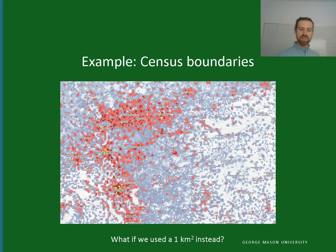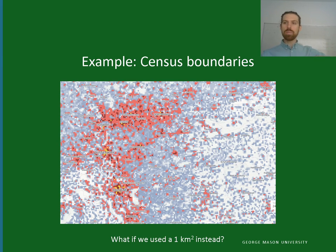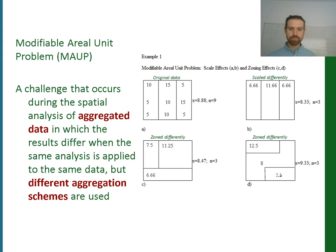What if instead of those artificial boundaries we used a one-kilometer-squared grid? This example for Cologne, Germany, shows highly granular insight when using a one-by-one kilometer grid. I quite like to use this level of granularity and then impose census boundaries on top, so you can extract from the most granular level and then change the other boundaries to see how it affects your results.